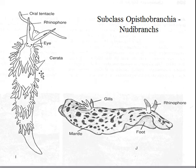Here are the cerata on the back, and they'll have gills — all for gas exchange.